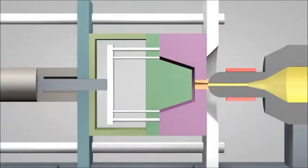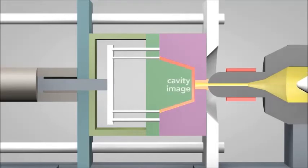In a matter of seconds, the screw injects the molten plastic into the empty part of the mold, called the cavity image. The plastic solidifies in under a minute. The mold opens and the part is ejected.